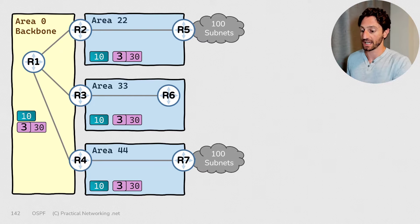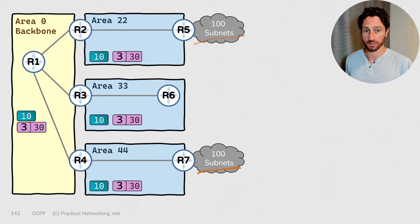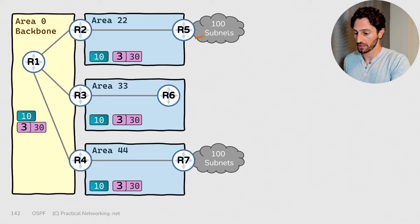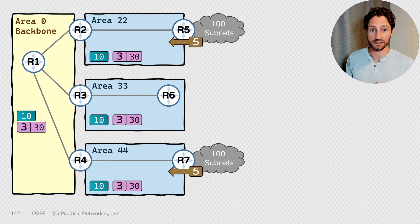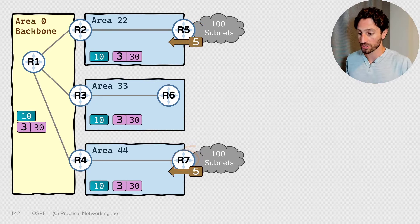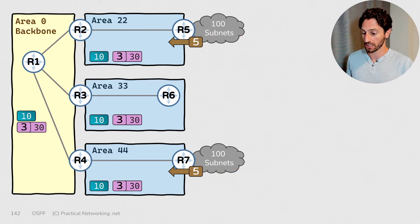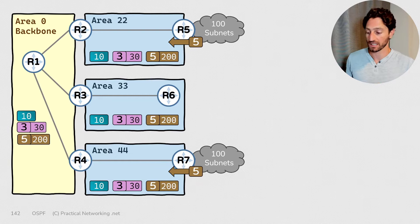Moreover, in our topology, we're going to have router 5 and router 7 do some redistribution — they're going to become ASBRs, each redistributing 100 subnets into OSPF. The actual protocols being redistributed are irrelevant to our demonstration. Since they are redistributing, those subnets will appear as type 5 LSAs within OSPF. Both router 5 and router 7 are each sending 100 type 5 LSAs, and those type 5 LSAs are sent unchanged throughout the OSPF domain, meaning in total there will be 200 type 5 LSAs in each of these areas.